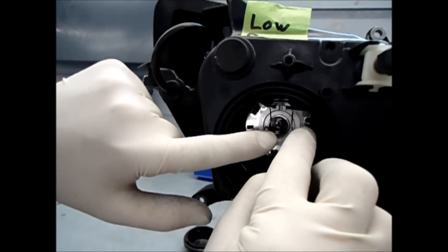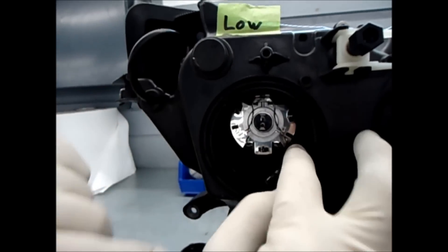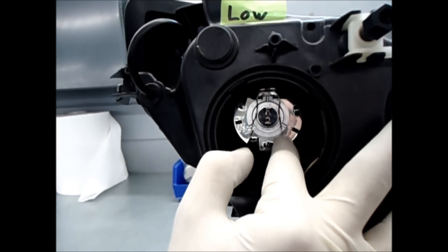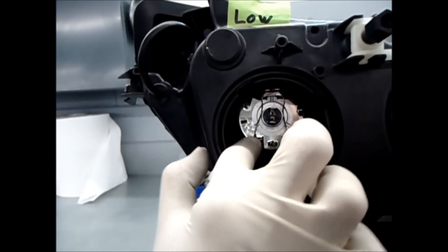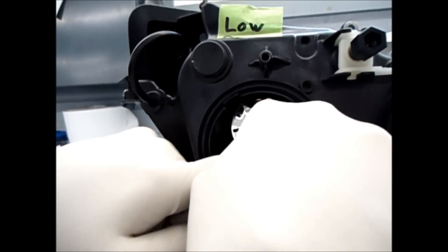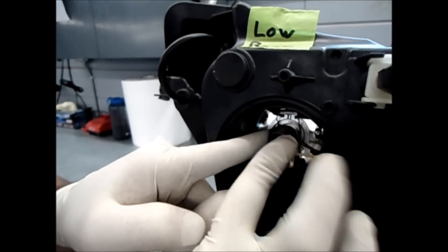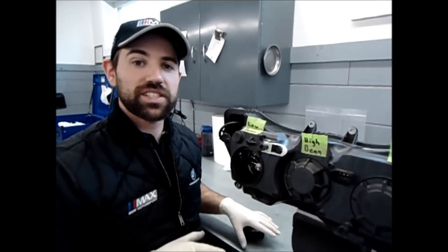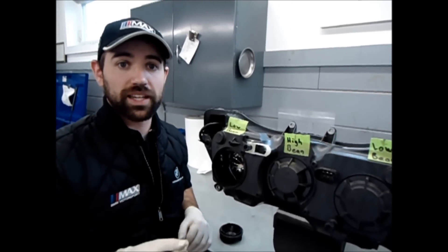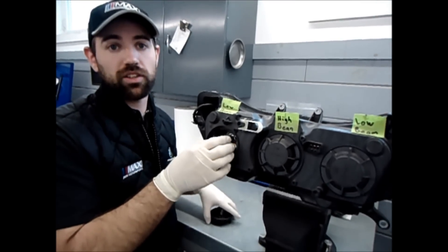Now the bulb's installed. We're going to move our wires down, spring them back into place, grab the connector, and reconnect. Now's a great time to go ahead and turn the key on, start the bike, and make sure your bulb's functioning correctly before we put the cover back on.